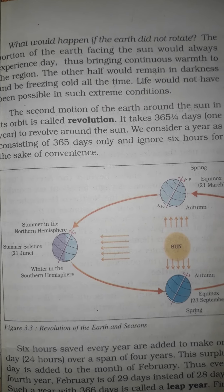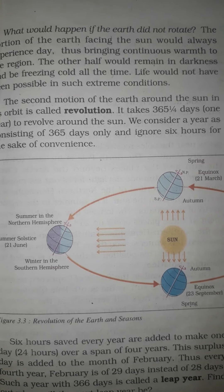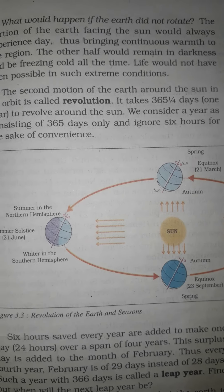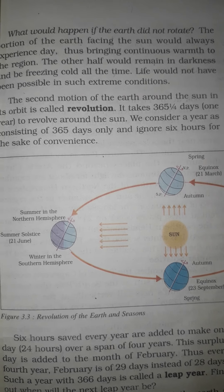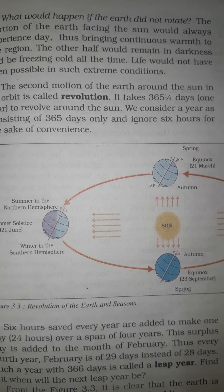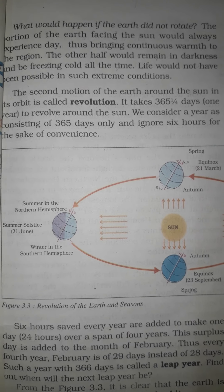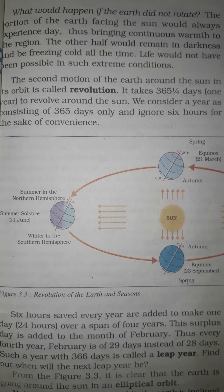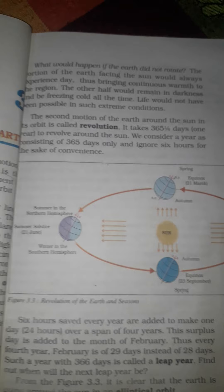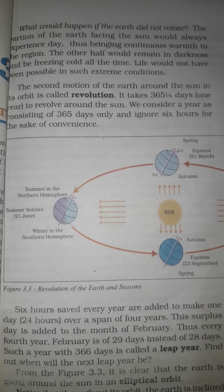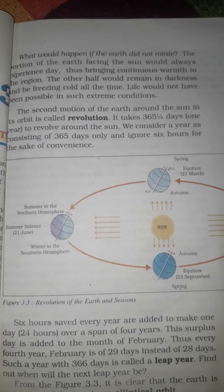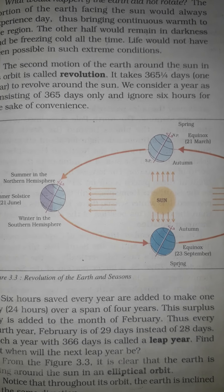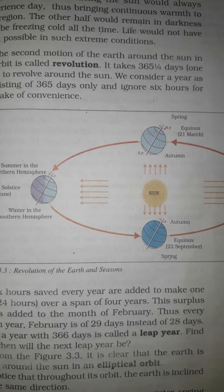The second motion of the earth is revolution — the movement of the earth around the sun in its orbit. It takes 365 and a quarter days, that is one year, to revolve around the sun. Revolution causes seasons, while rotation causes day and night.